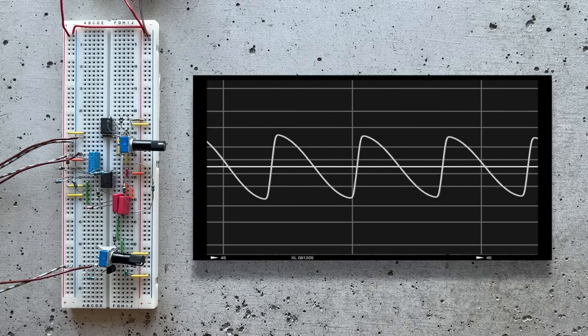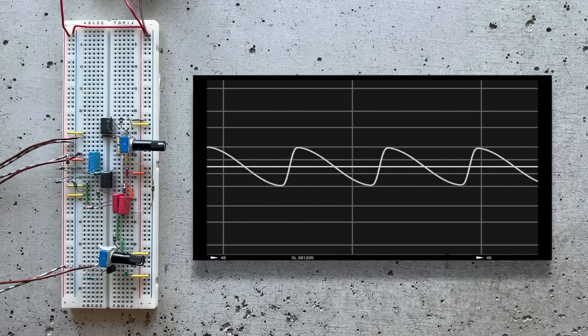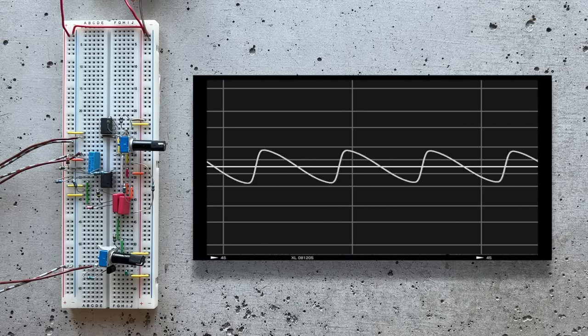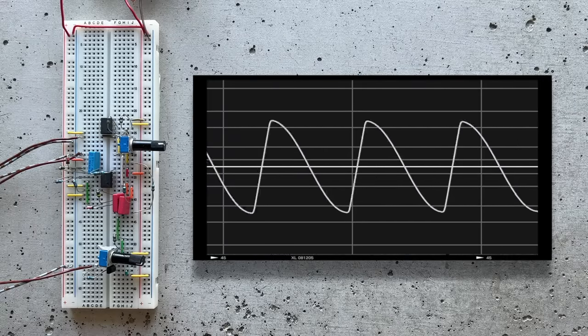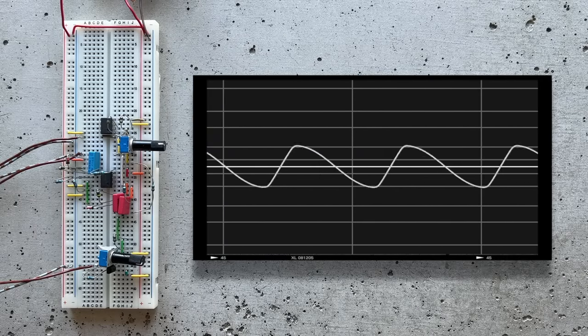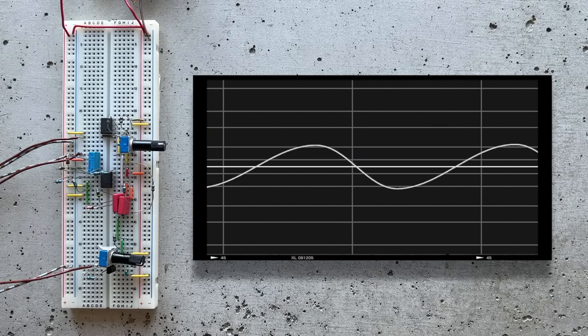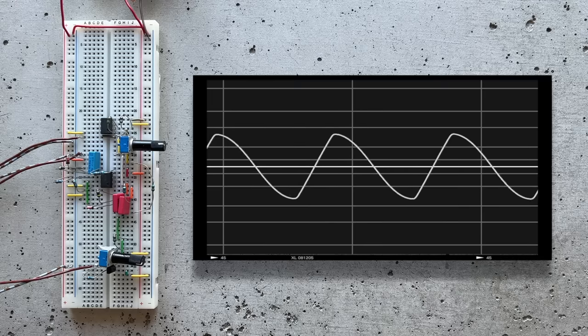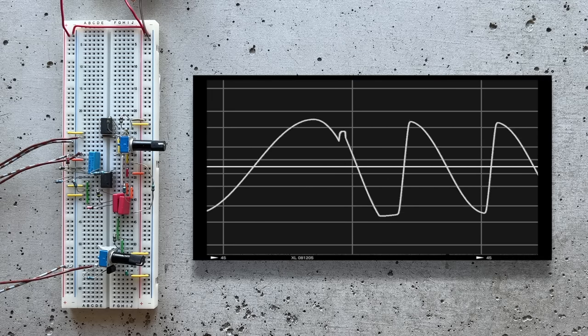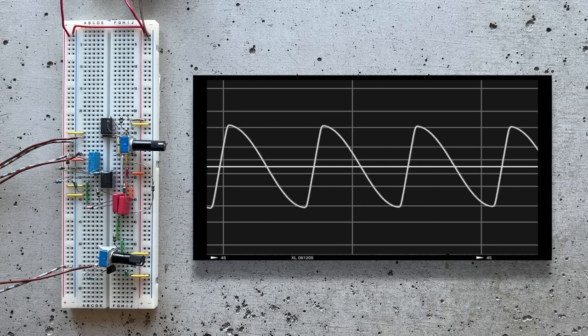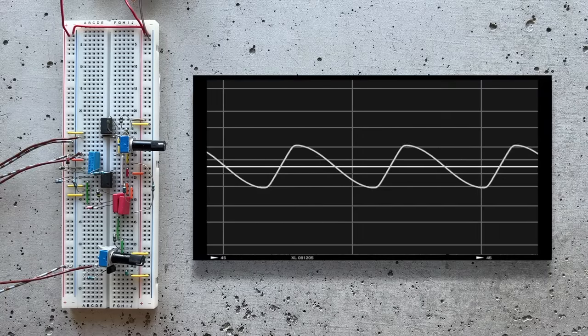This explains why our sine wave gets morphed into a rounded sawtooth. Because the transistor speeds up one oscillation phase considerably more than the other by sinking more current than it sources. But since the distortion is not too intense, at least for my taste, I think we can write this off as an okay compromise. Great.